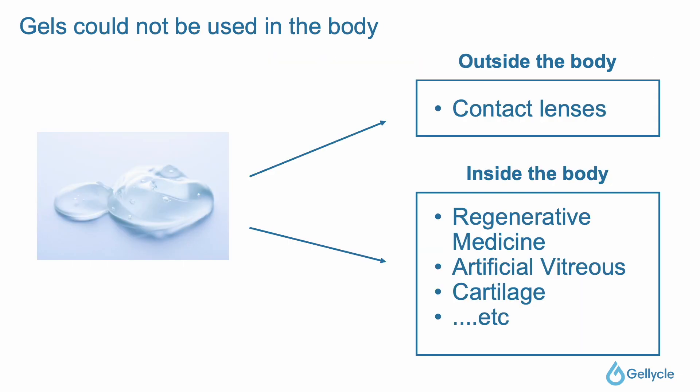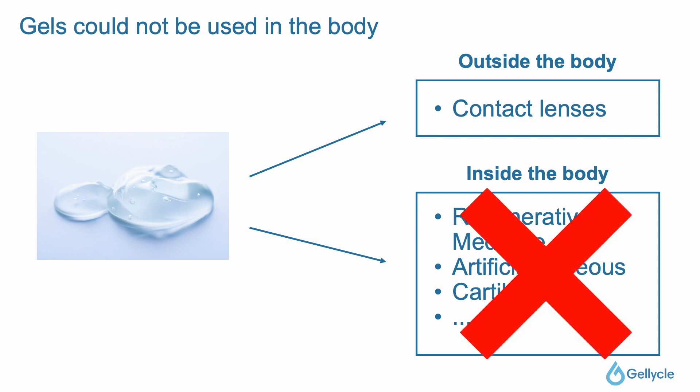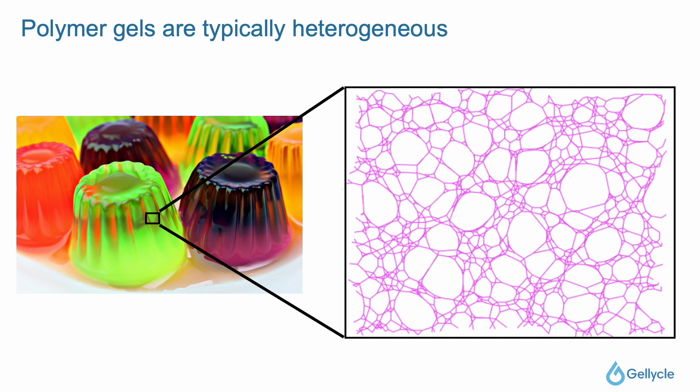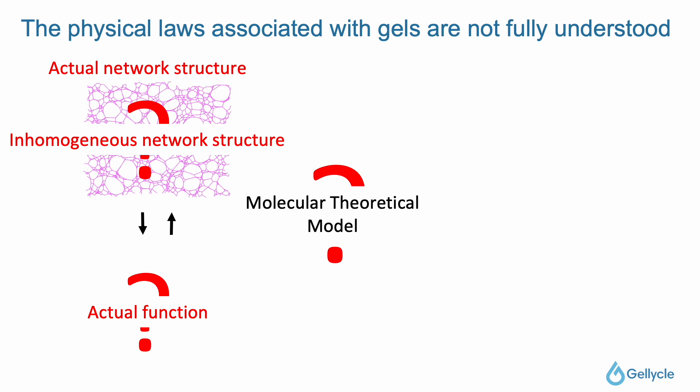There have been many requests in the past to use gel inside the body, but the actual use of gel has been limited to contact lenses outside the body and has not been realized for use in regenerative medicine. So why did this happen? It is because the gel is not homogeneous. If you zoom in on the jelly as shown here, you can see inhomogeneous networks. The reason this inhomogeneity is problematic is that the physical laws of gel have not yet been elucidated. Therefore, in its inhomogeneous state, it is impossible to predict or control its behavior in the body using mathematical formulas.